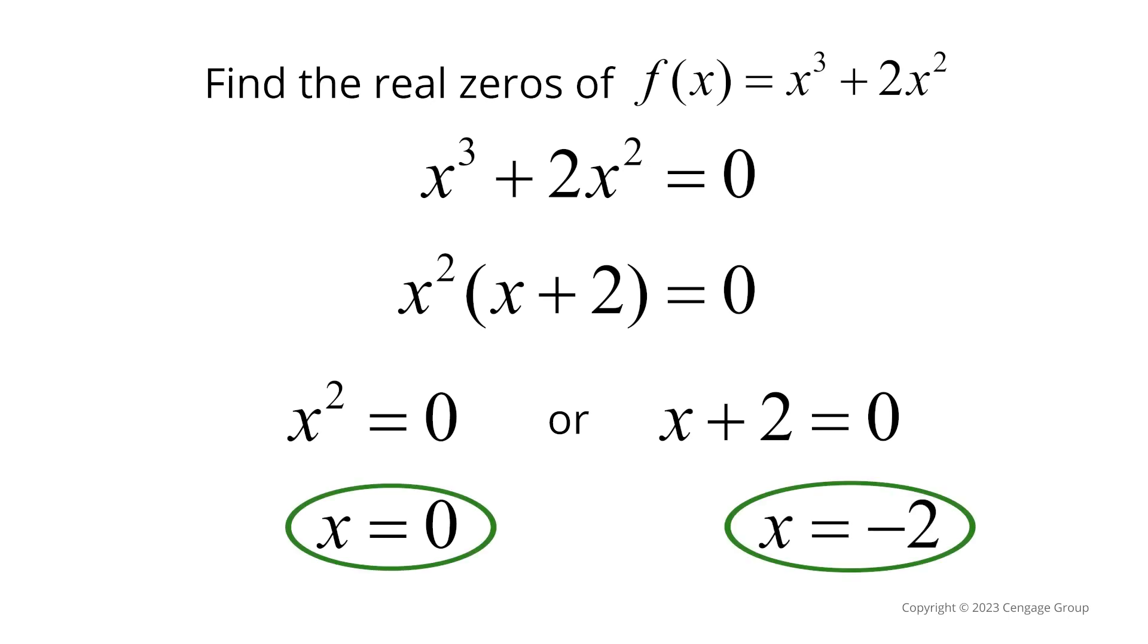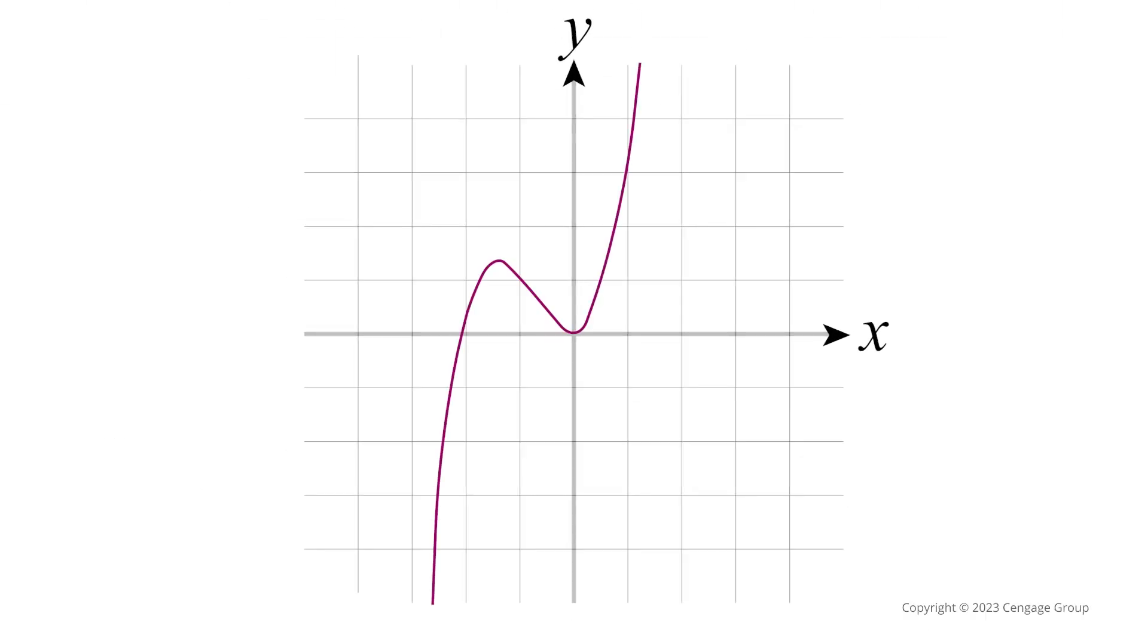These are the real zeros of our polynomial function. Here is the graph. As we can see, our zeros are represented with the x-intercepts at x equals zero and x equals negative 2.